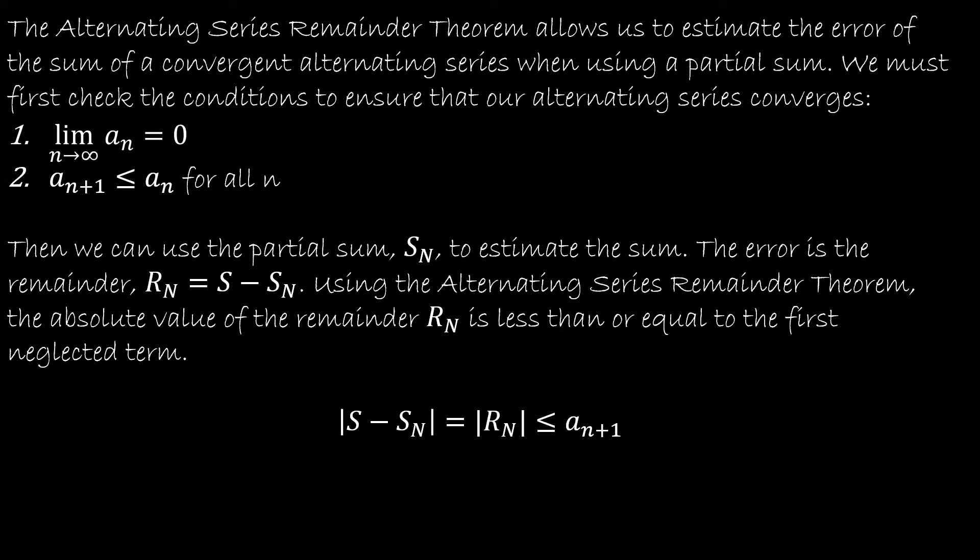Obviously we can only use the alternating series remainder theorem if we have an alternating series and that series converges. So the first thing that we're going to do in any of these questions is to do exactly what we did in our last video. We have to ensure that it's an alternating series that converges and to do that we have to check these conditions. First that the limit approaches zero and that essentially the series is decreasing. Each subsequent term is less than the term before it.